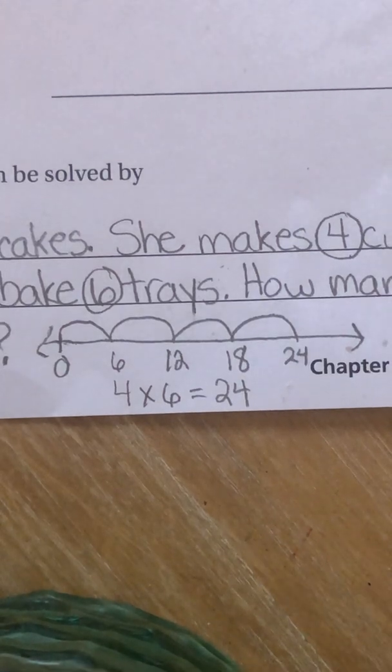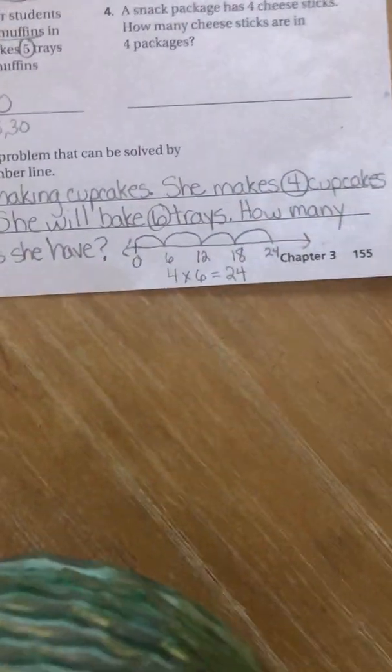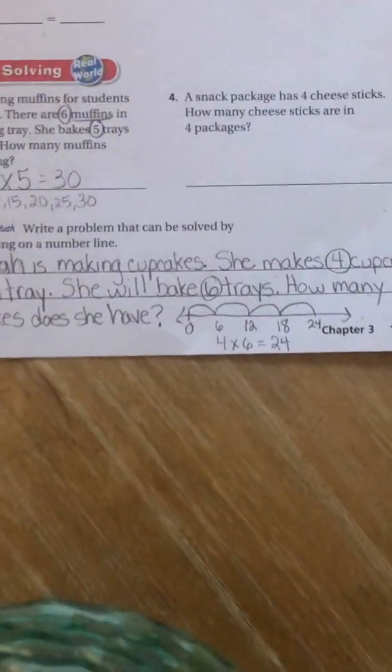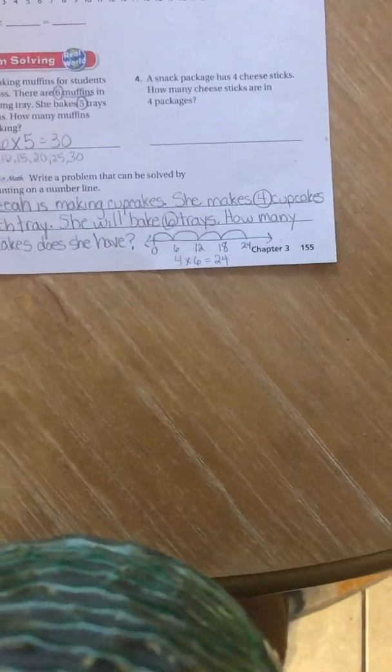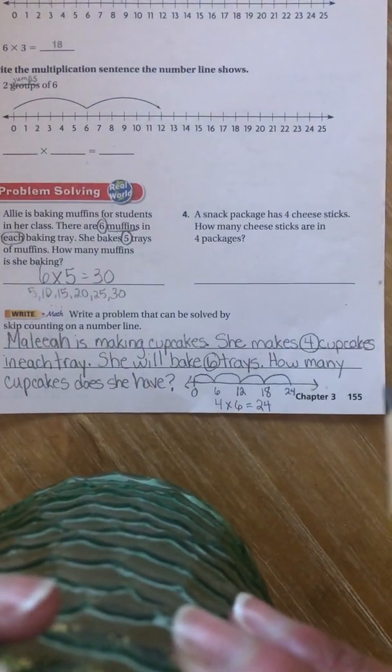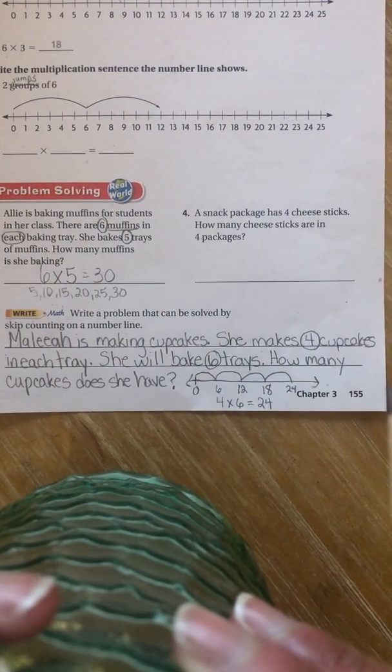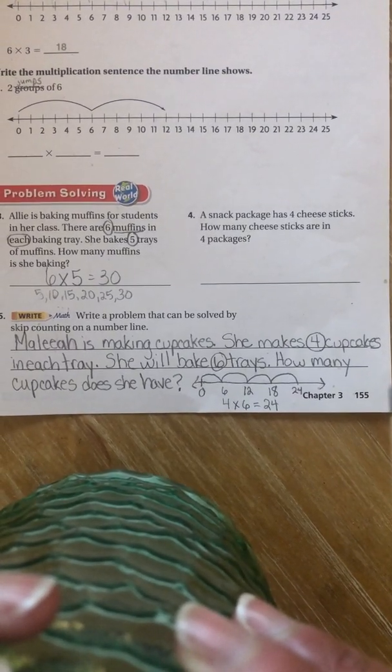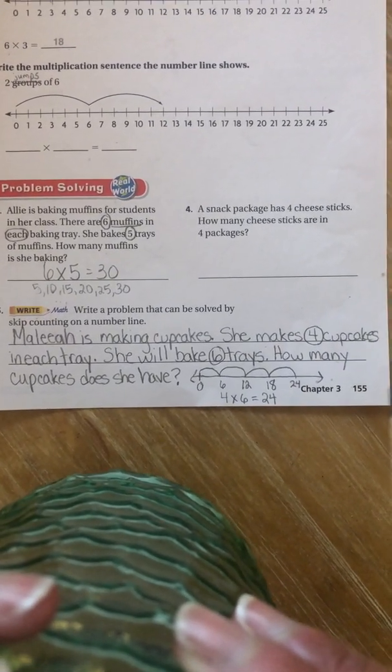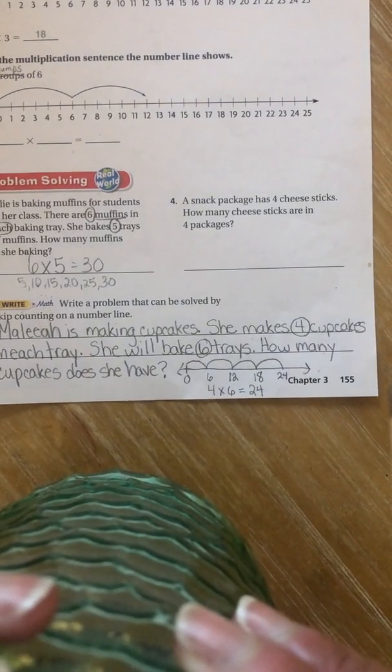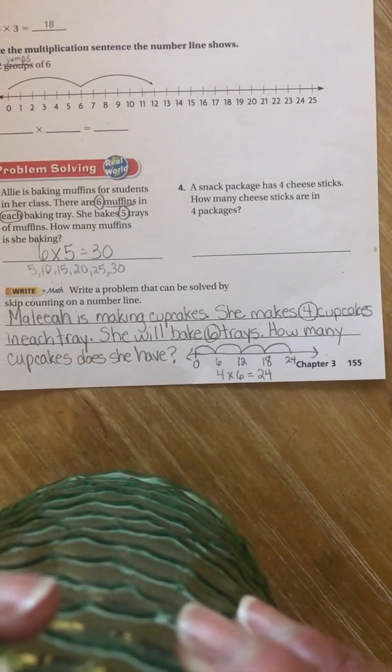So there's your answer. She made four cupcakes in one tray, but she's got to use six trays to make a bunch of cupcakes. And how many will she have when she's done? 24. So I'm going to zoom out again and show you everything. There is the whole problem. Malia is making cupcakes. She makes four cupcakes in each tray. She will bake six trays. How many cupcakes does she have? When we skip count by six, four times, we get 24.